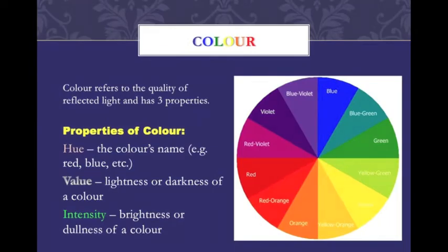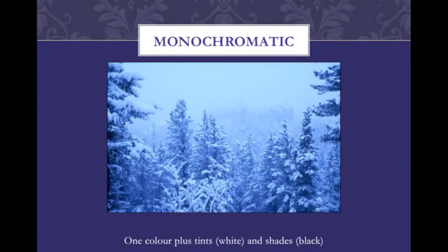Color refers to the quality of reflected light and has three properties: hue, which is the color's name; value, the lightness or darkness of the color; and intensity, which is the brightness or dullness of the color.